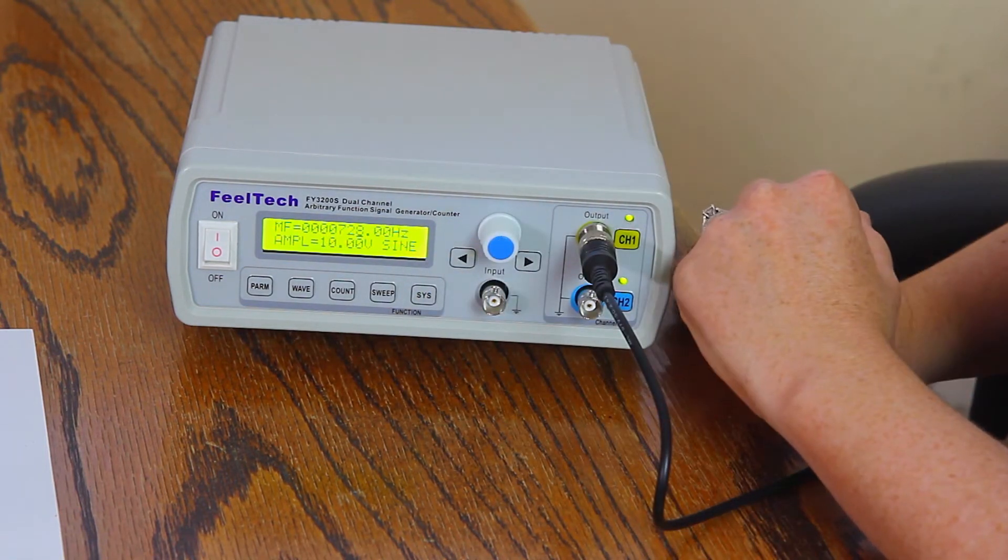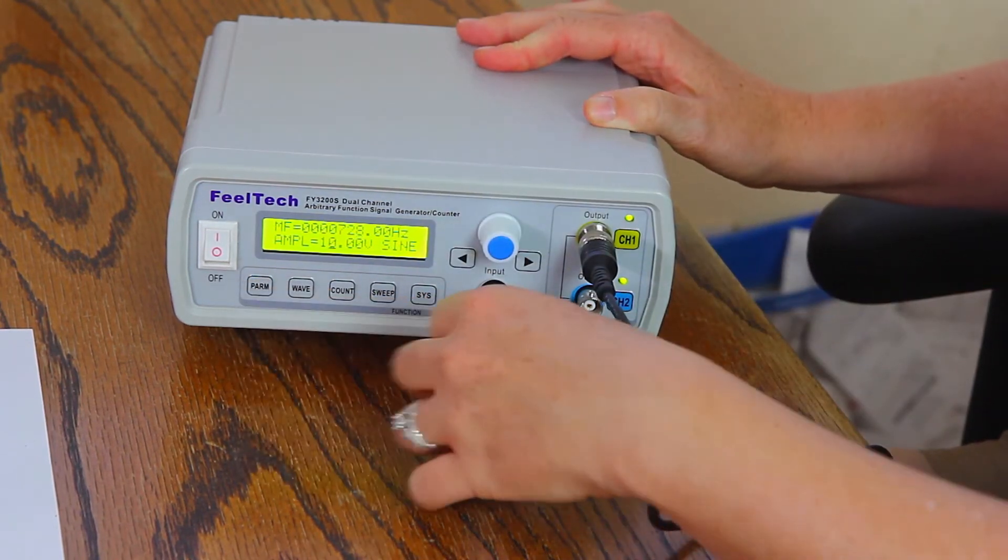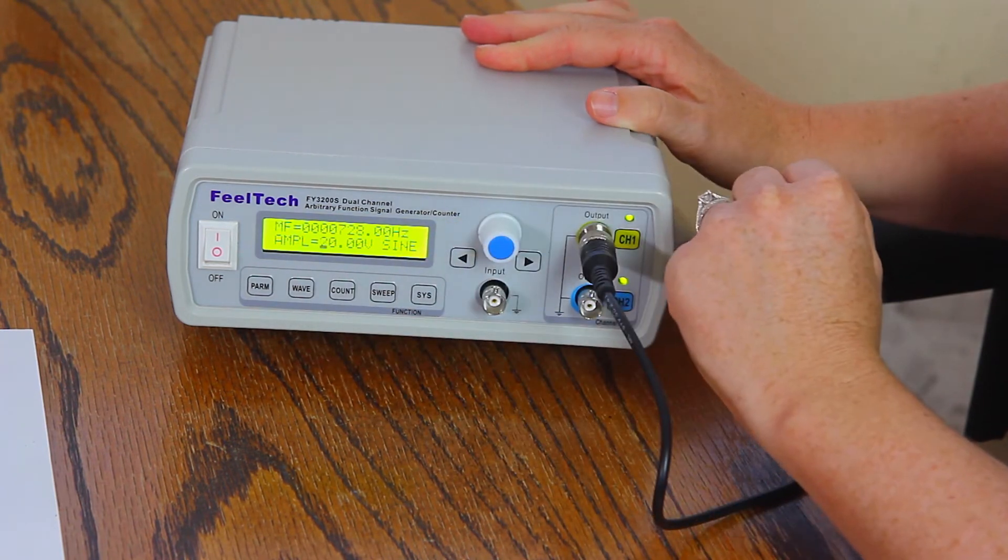Now to change the voltage. It's at 10 volts right now. Click the PARM button and change it to 20 volts.